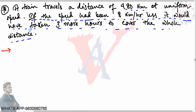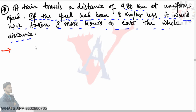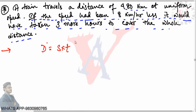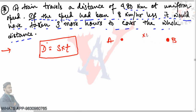After reading the problem, you get the intuition that it is about distance, speed, and time. The relation is: distance equals speed into time. In the first case, the train was moving with uniform speed between points A and B. Let the uniform speed be x kilometers per hour, and the distance was 480 kilometers. In the second case, the speed is 8 km/h less, so the new speed is x minus 8 kilometers per hour, and the distance between A and B remains 480 kilometers.